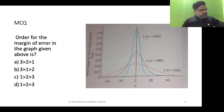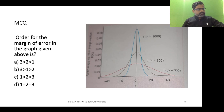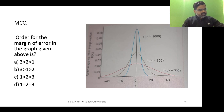Based on margin of error you have to choose from the graphs. The sample size for the third graph is 600, for the second graph is 800, and for the first graph is 1000. So based on that, what do you think the margin of error will be? I have not seen any responses till now, so let's not waste time.